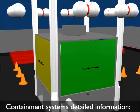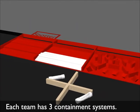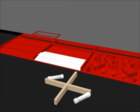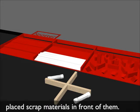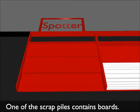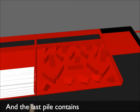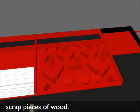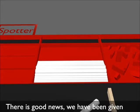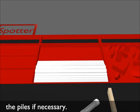Containment systems detailed information: Each team has three containment systems. Unfortunately, the construction crews have placed scrap materials in front of them. One of the scrap piles contains boards, the middle pile contains leftover pipes, and the last pile contains scrap pieces of wood. There is good news: we have been given permission for the robots to drive over the piles if necessary.